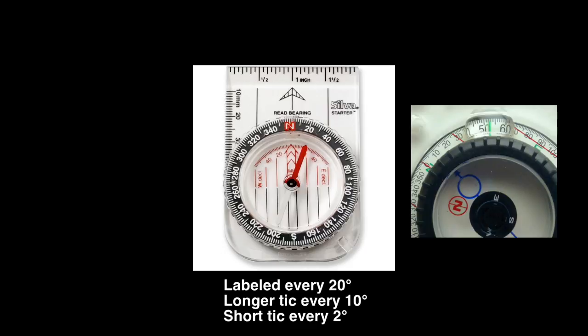Here's a compass with a molded magnifier over the index line. The dial is labeled every 10 degrees, has longer tick marks every 5 degrees, and a tick for every degree.